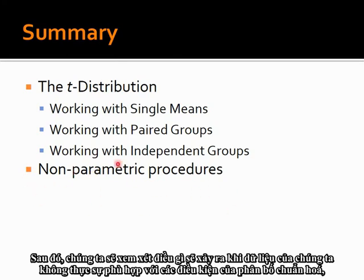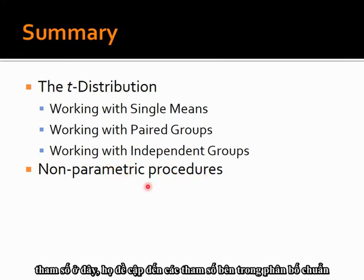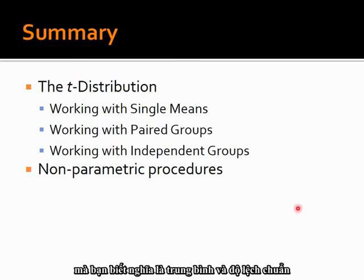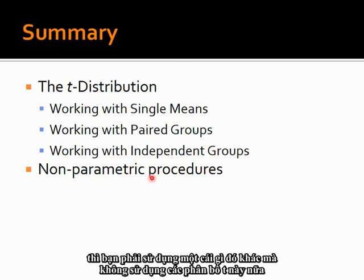Then we'll look at what happens when our data doesn't actually fit the conditions of normality. That's what they mean by non-parametric procedures. Parametric refers to the parameters inside a normal distribution — the mean and the standard deviation. So when your data doesn't fit the conditions of normality, when it's not normally distributed, you have to use something different — no longer these T distributions.